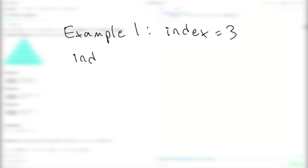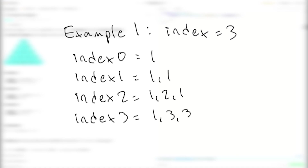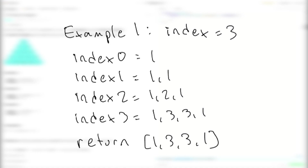For example 1 we're given index equal to 3. The first index is equal to just 1. The second index is equal to 1, 1. The third index is equal to 1, 2, 1. Finally the fourth index — index 3 — is equal to 1, 3, 3, 1. So we return 1, 3, 3, 1. That's how the first example breaks down.